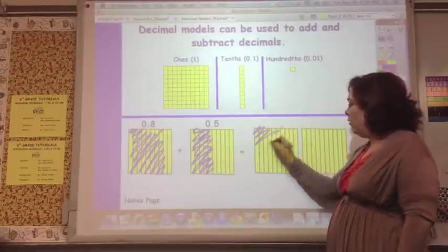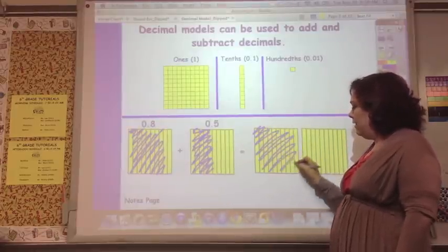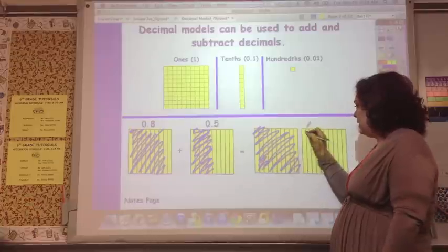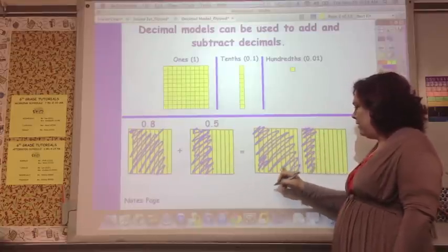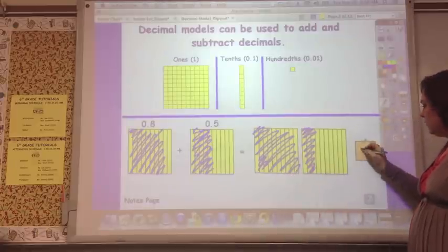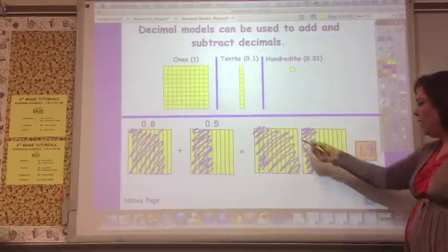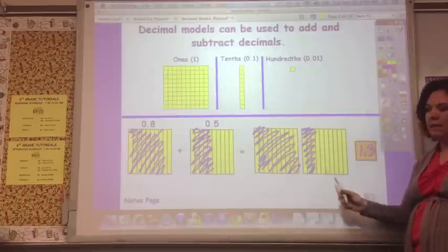And then if you count all those up, eight plus five is thirteen tenths. So it's going to be one whole, and then how many out of the next one? Three. And if you shade five and shade eight more, this is what you would get. And so your total is one and three tenths.